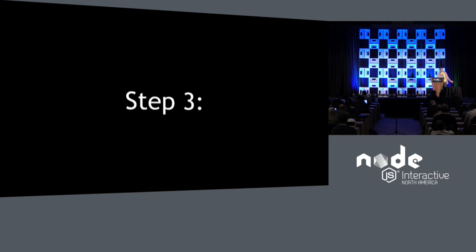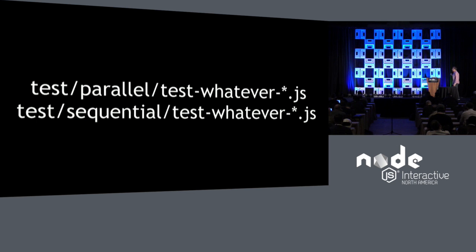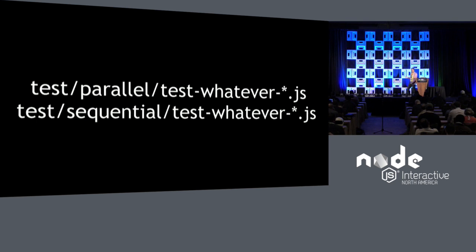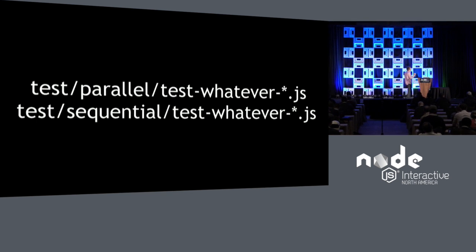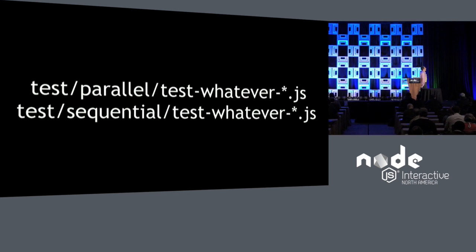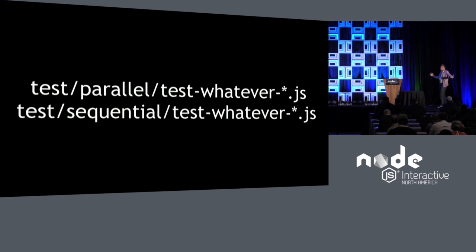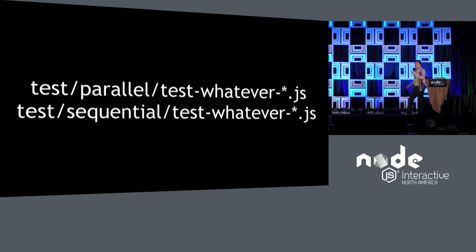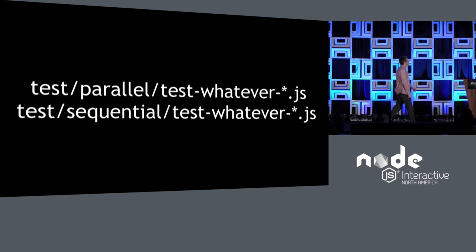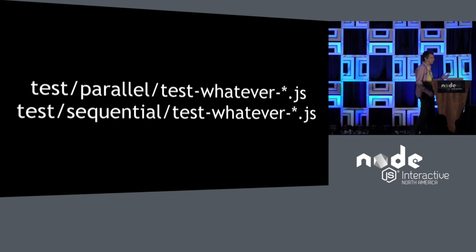Step three, after all of that, is to find the tests for that module and read through them, because sometimes there's behavior that's only documented in tests — and that's where things get really interesting. If you were looking at HTTP, you might look in test/parallel for test-http-whatever.js. For HTTP there are going to be way too many test files to read through all of them, but you can look at test-http.js and get a feel for the tests.